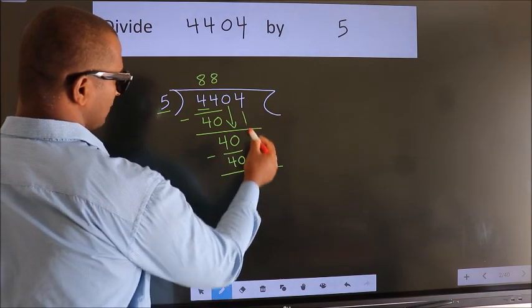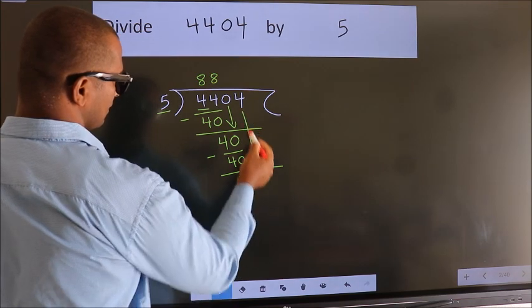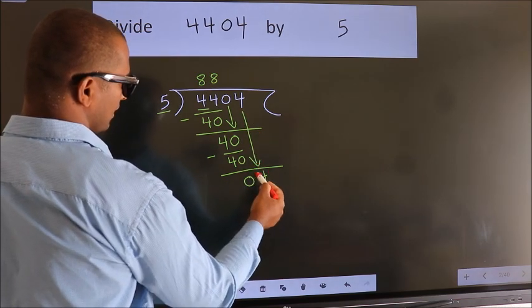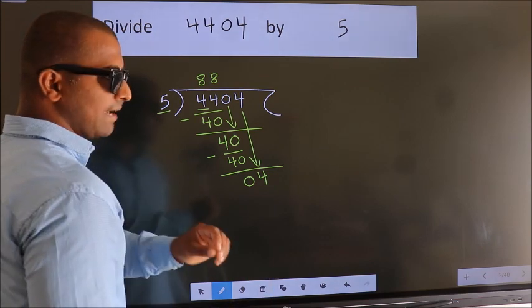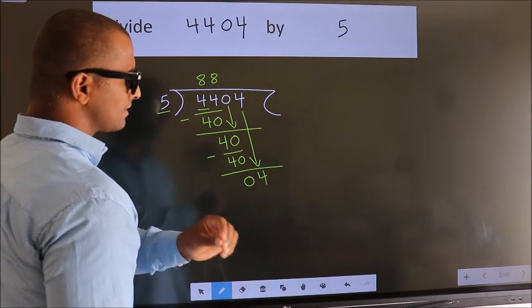After this, bring down the beside number. So 4 down. After this step, the mistake happens. And the mistake is this.